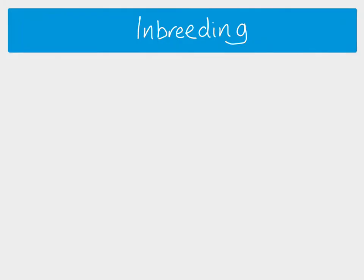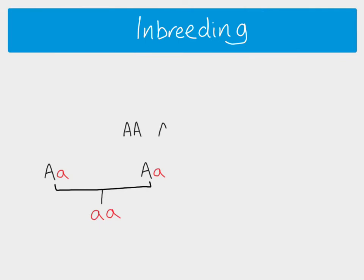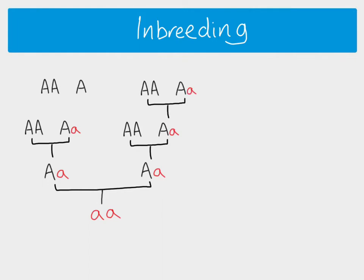So let's think about inbreeding first of all. If we have an individual with a homozygous recessive genotype, this individual must have inherited one recessive allele from each parent, so each parent must have at least one of those recessive alleles. We can go back to previous generations to show how the recessive allele has been passed down from generation to generation until the recessive allele is expressed.